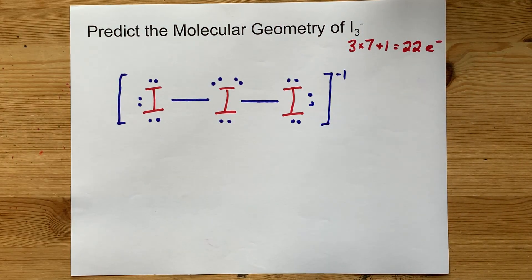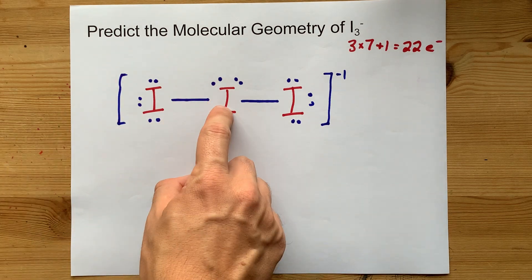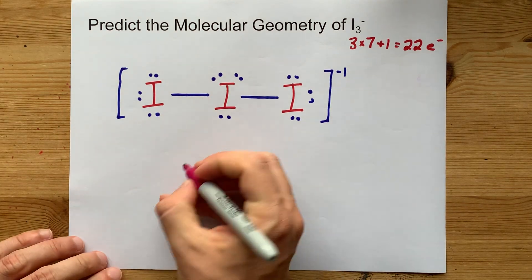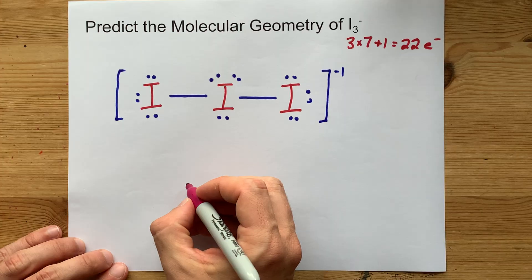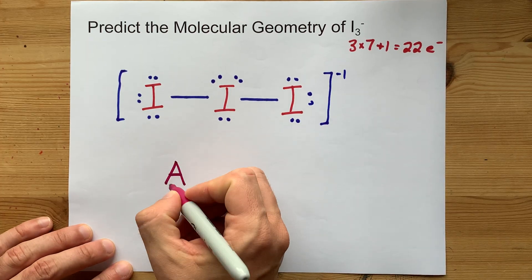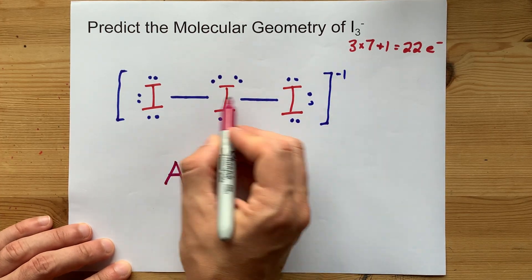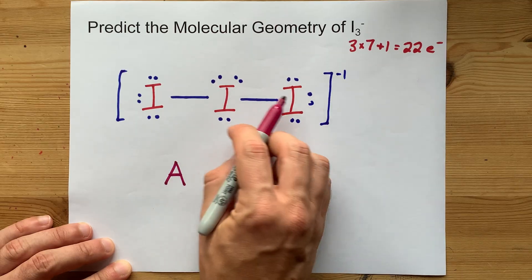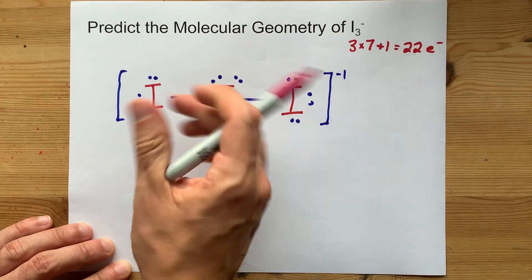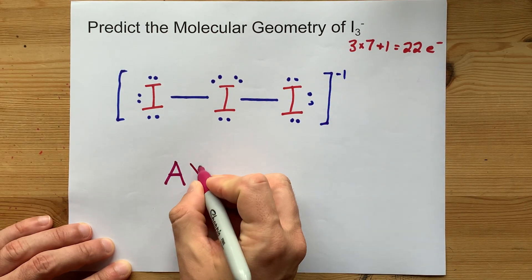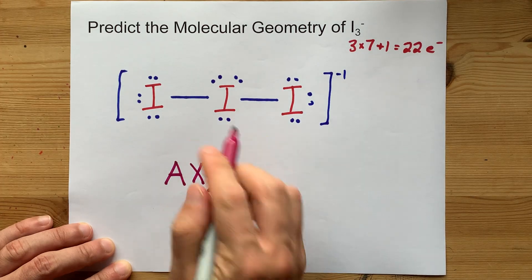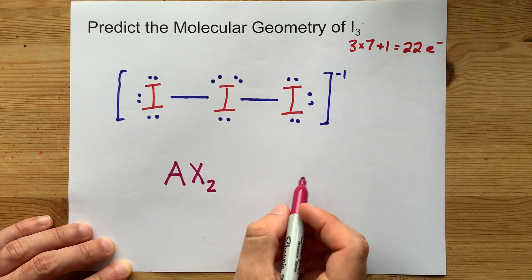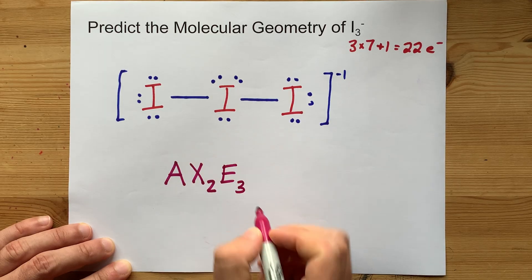But you came here for the molecular geometry. The central atom here, which in VSEPR notation is shown with an A, has two bonds to it, or rather two atoms that it is bonded to. That is X2. And then it has three lone pairs around it as well. That is E3.